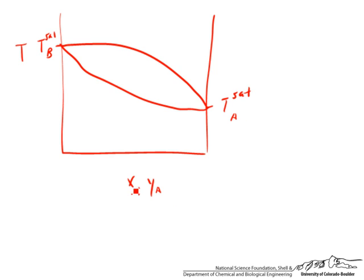And this is X-A and Y-A. You're given that you have a 50-50 mixture, so we have 50% A here.